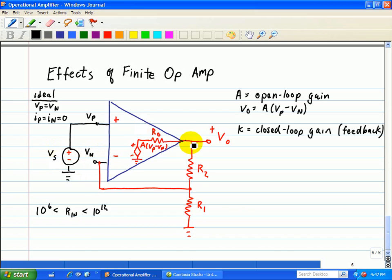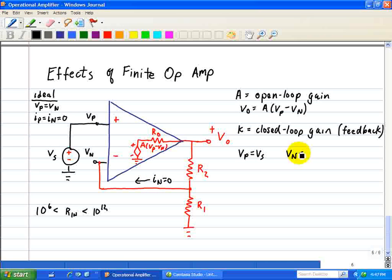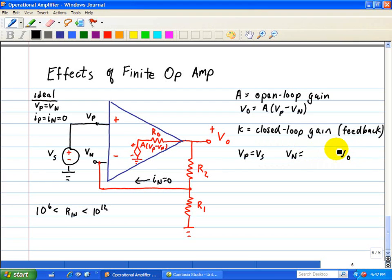So in other words, there's no current going into the input, so here IN is equal to zero, so all of the current going through R2 goes through R1. So therefore, we know that VP is equal to VS as we discussed earlier, and VN in terms of VO is just a voltage division of R1 over R1 plus R2.